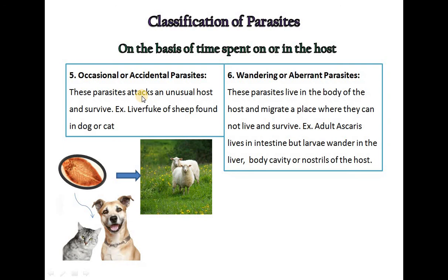The fifth type is occasional or accidental parasites, which attack an unusual host and survive. For example, the liver fluke of sheep found in a dog or cat. The sixth type is wandering or aberrant parasites, which live in the host but migrate to places where they cannot normally survive. For example, adult Ascaris lives in the intestine, but larvae may wander into the liver, body cavity, or nostrils of the host.